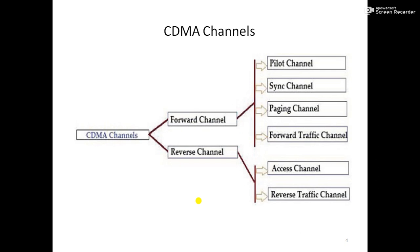The pilot channel is a reference channel used by the mobile station to acquire timing and as a phase reference for coherent demodulation. It is continuously transmitted by each base station on each active CDMA frequency, and each mobile station tracks this signal continuously. The sync (synchronization) channel carries a single repeating message which gives information about the time and system configuration to the mobile station.